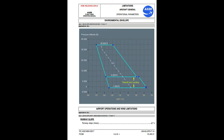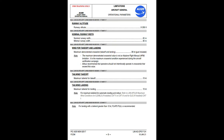Airport operations and wind limitations: runway slope plus or minus 2%, runway altitude 9,200 feet, nominal runway width 45 meters, minimal runway width 30 meters. Wind for takeoff and landing: maximum demonstrated crosswind takeoff and landing 38 knots, gusts included. Note: the maximum demonstrated crosswind value is not an airplane flight manual limitation; it is the maximum crosswind condition experienced during the aircraft certification campaign. Airbus recommends that operators should not intentionally operate in crosswinds that exceed this value. Tailwind: maximum tailwind for takeoff and landing, 15 knots.